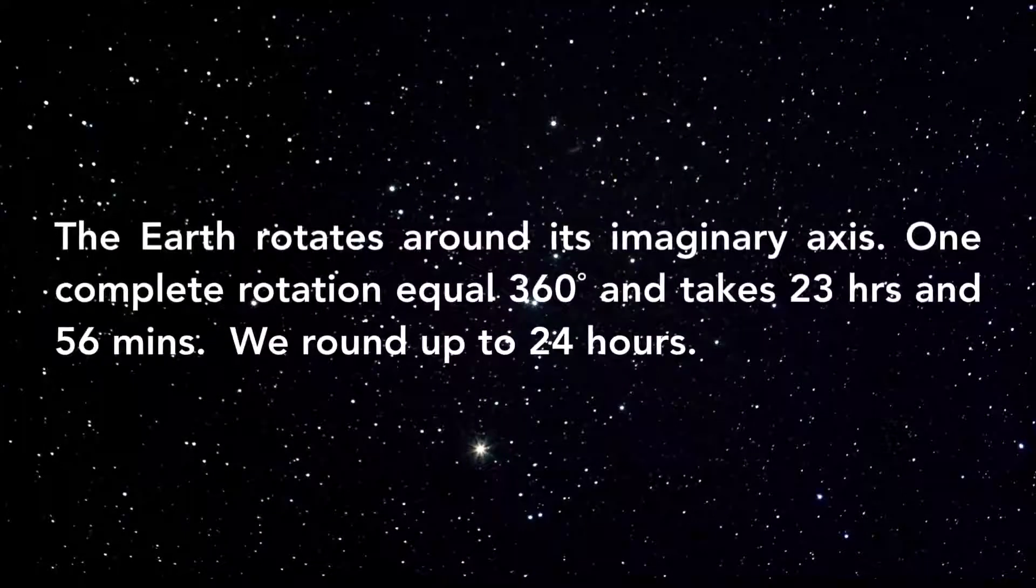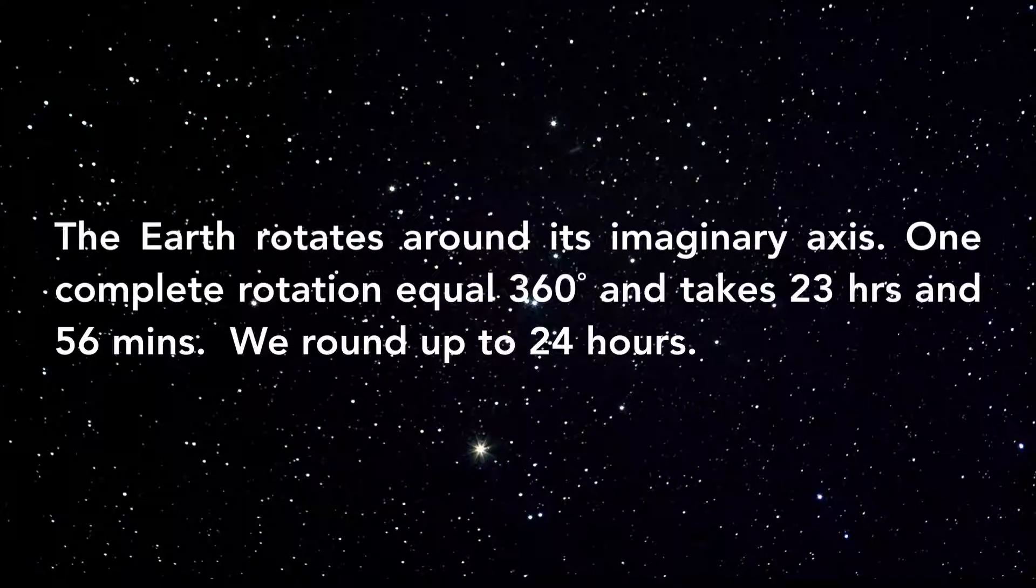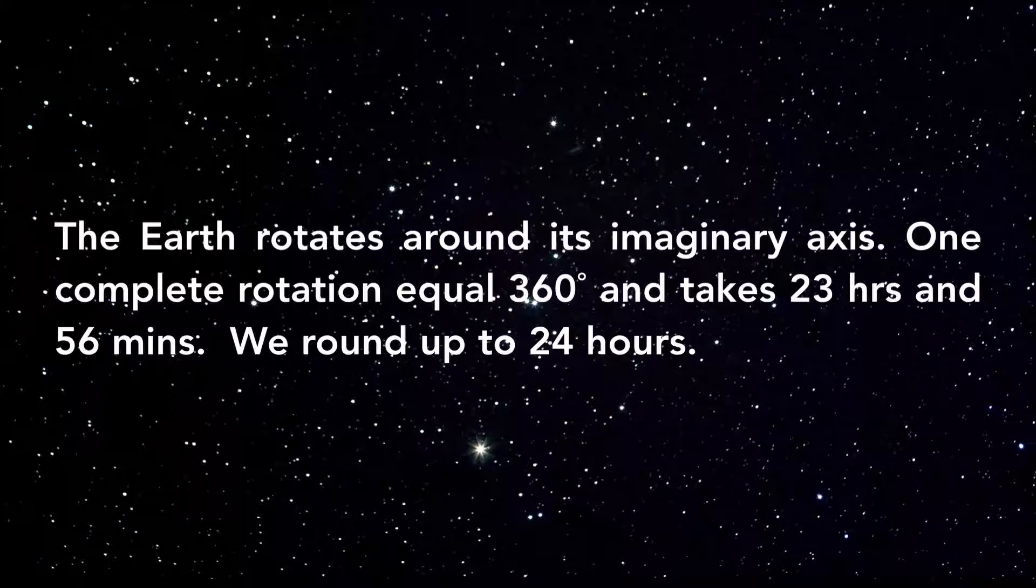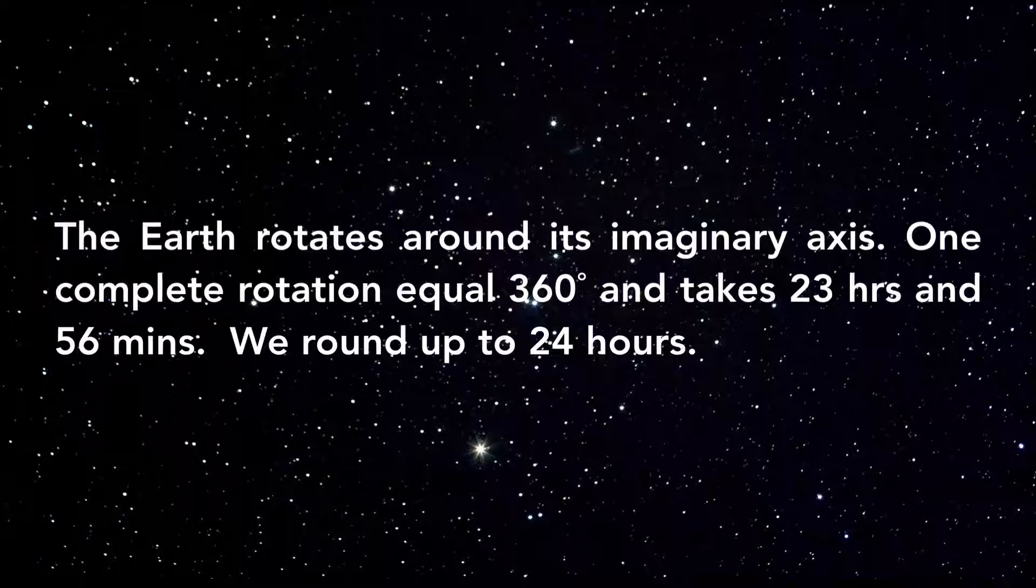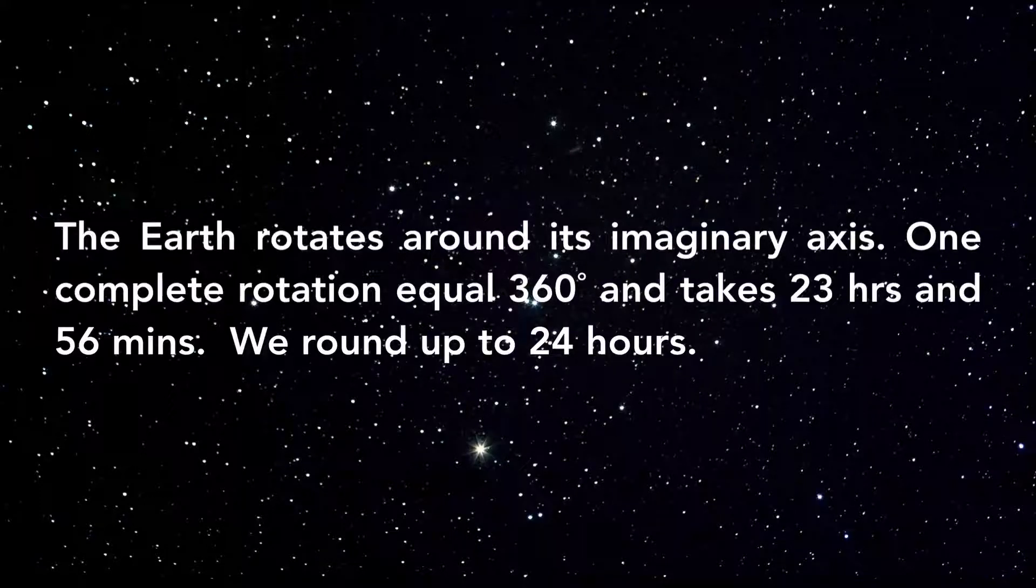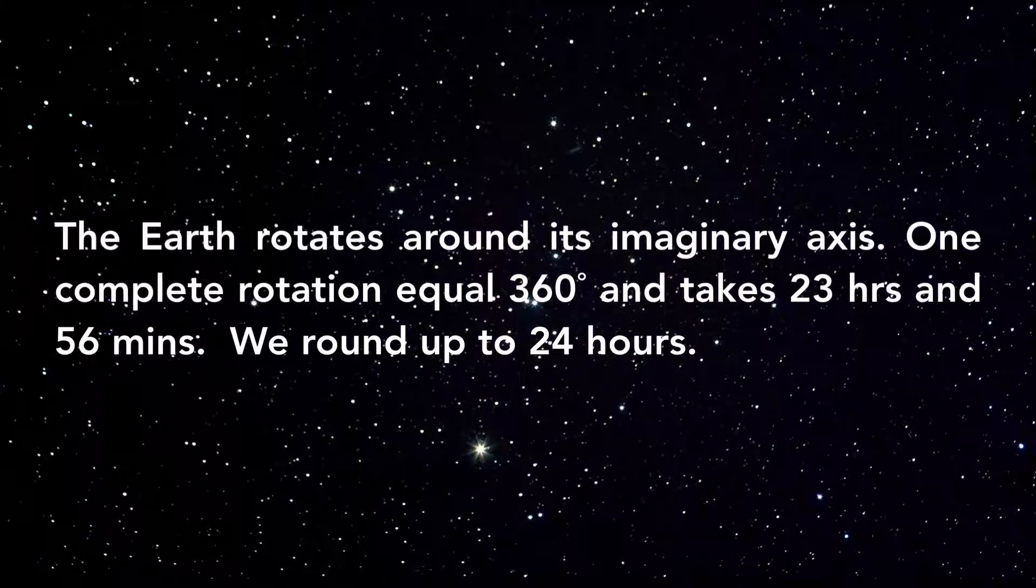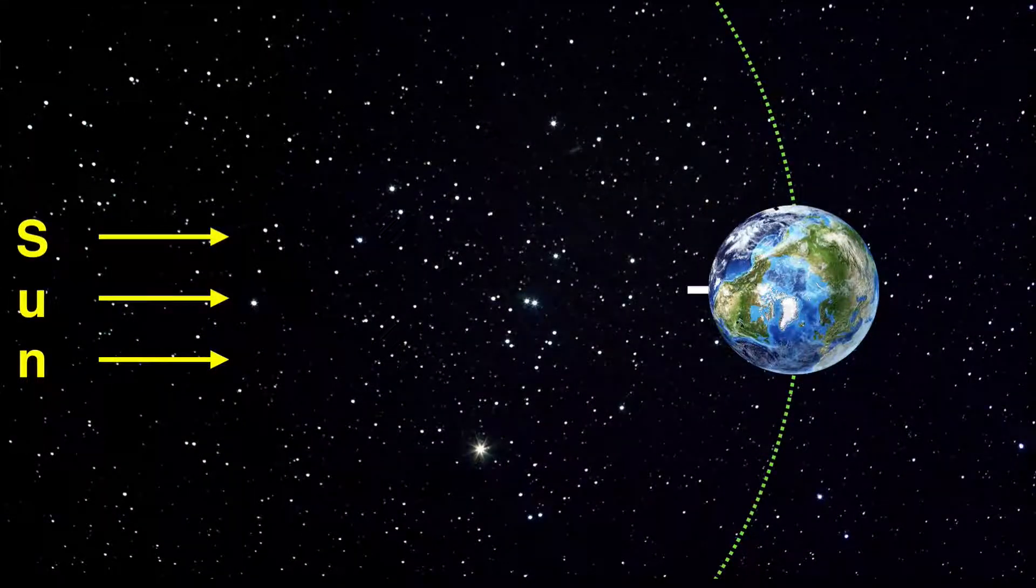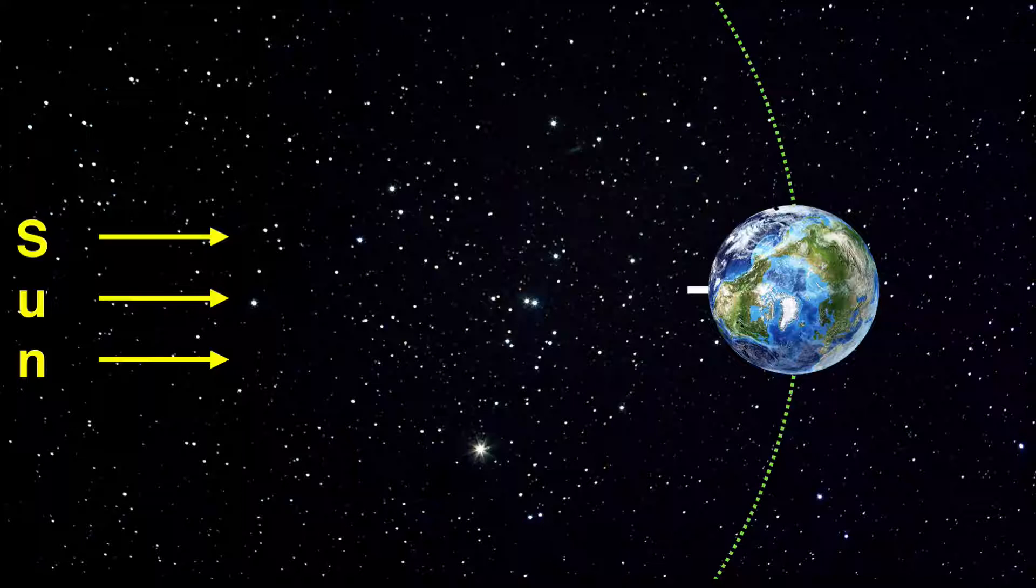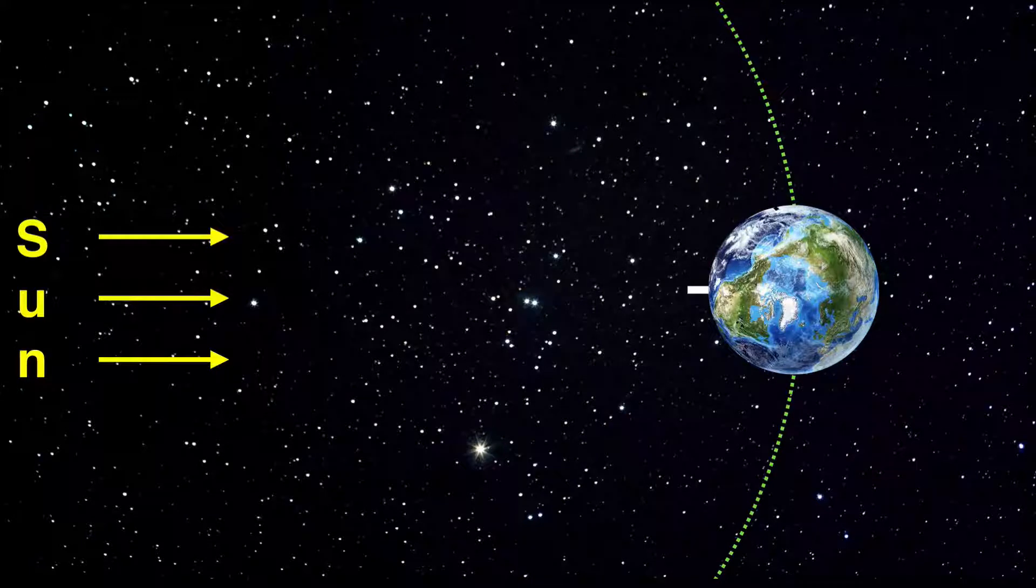So the Earth rotates around that imaginary axis in a complete 360 degree rotation in 23 hours and 56 minutes. Now that's not what you've always known. We round up to 24 hours because it just makes it easier. But there's actually some rhyme and reason to this. And let me show you what I mean. If you were to take into account where the Earth begins its rotation and where it ends its rotation, that's where these two different numbers come from.